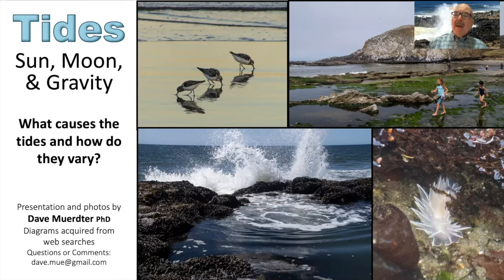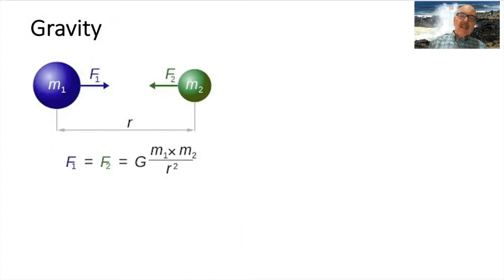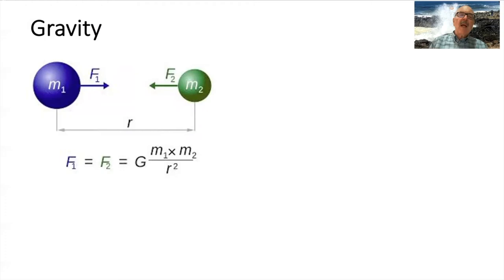To start off with, we need to talk about gravity, because gravity is what causes the tides — it's the gravity of the sun and the moon, especially the moon, which is closer to us. Gravity is a force between two masses. We know that the earth is quite massive and the moon is also large, but it is some distance away. We can find out the force by this equation: multiplying the two masses together and dividing by the distance apart squared.